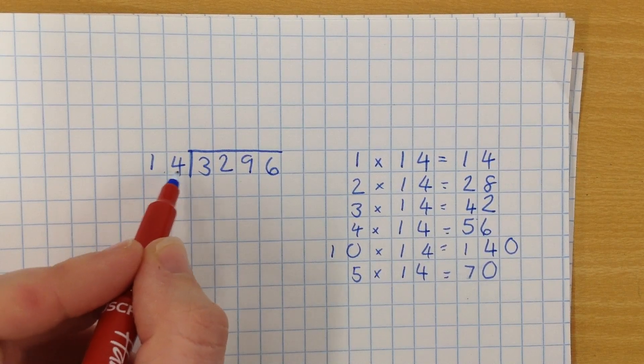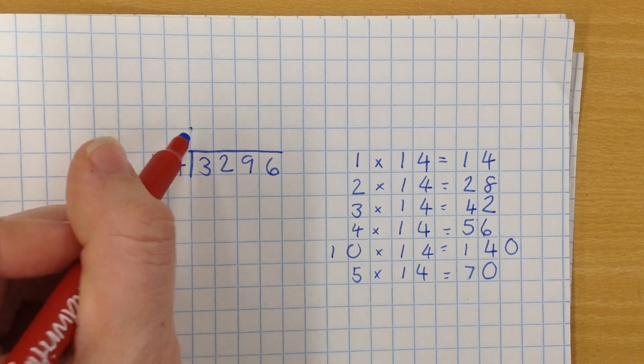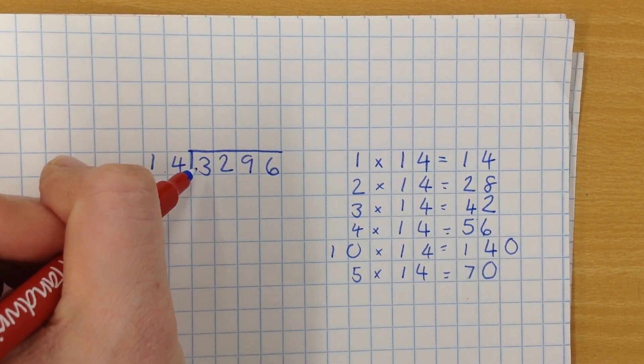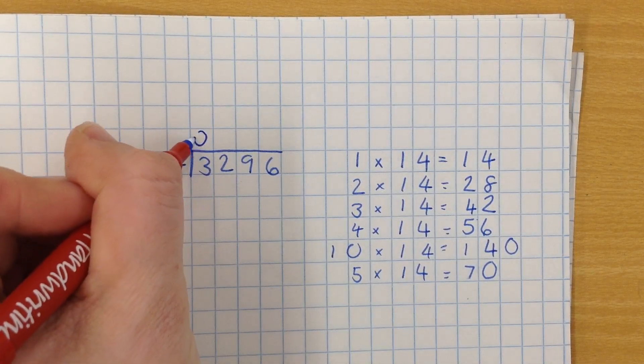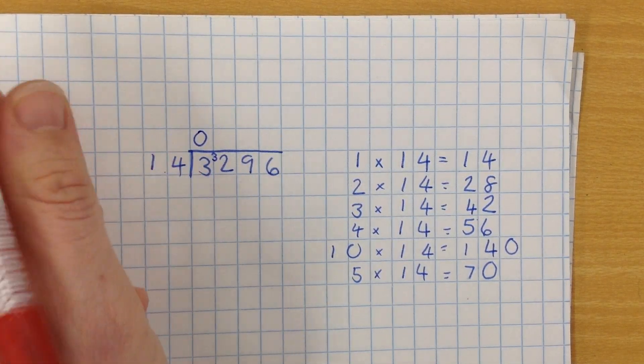So first thing I'm going to do is how many times does 14 go into 32? So 14 goes into, well, actually, I beg your pardon, I need to do how many times does 14 go into 3? Well, it doesn't. I skipped ahead because I could see that straight away. And then I'm going to do how many times does 14 go into 32?